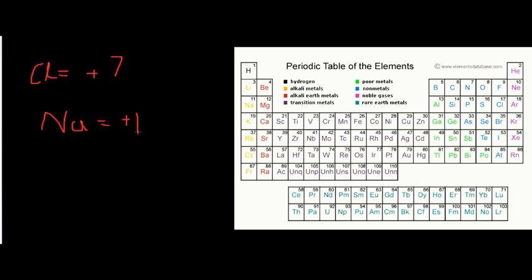The higher the effective nuclear charge, the more the electrons are pulled toward the nucleus. So which atom has the bigger atomic radius — sodium or chlorine? The answer is sodium, because in chlorine, all electrons are pulled much closer and tighter to the nucleus due to its +7 effective nuclear charge, compared to sodium's +1.